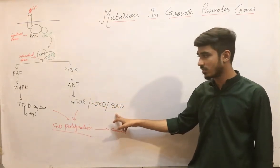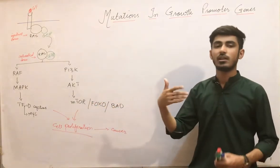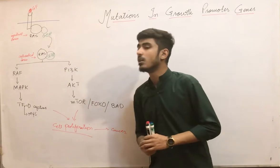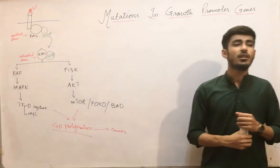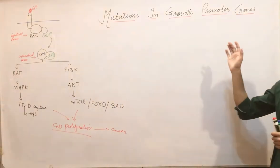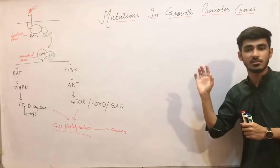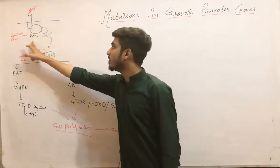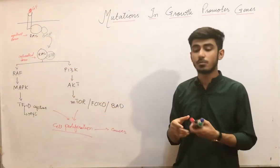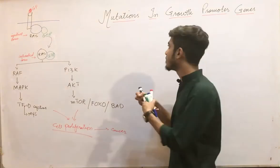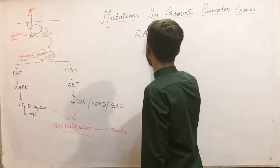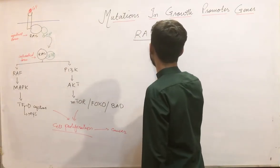PI3K (phosphoinositol 3-kinase) activates AKT, which further activates mTOR and inactivates two genes that carry on growth. Now, moving on to mutations in the RAS genes — these are all growth promoter genes, starting with RAS mutations.